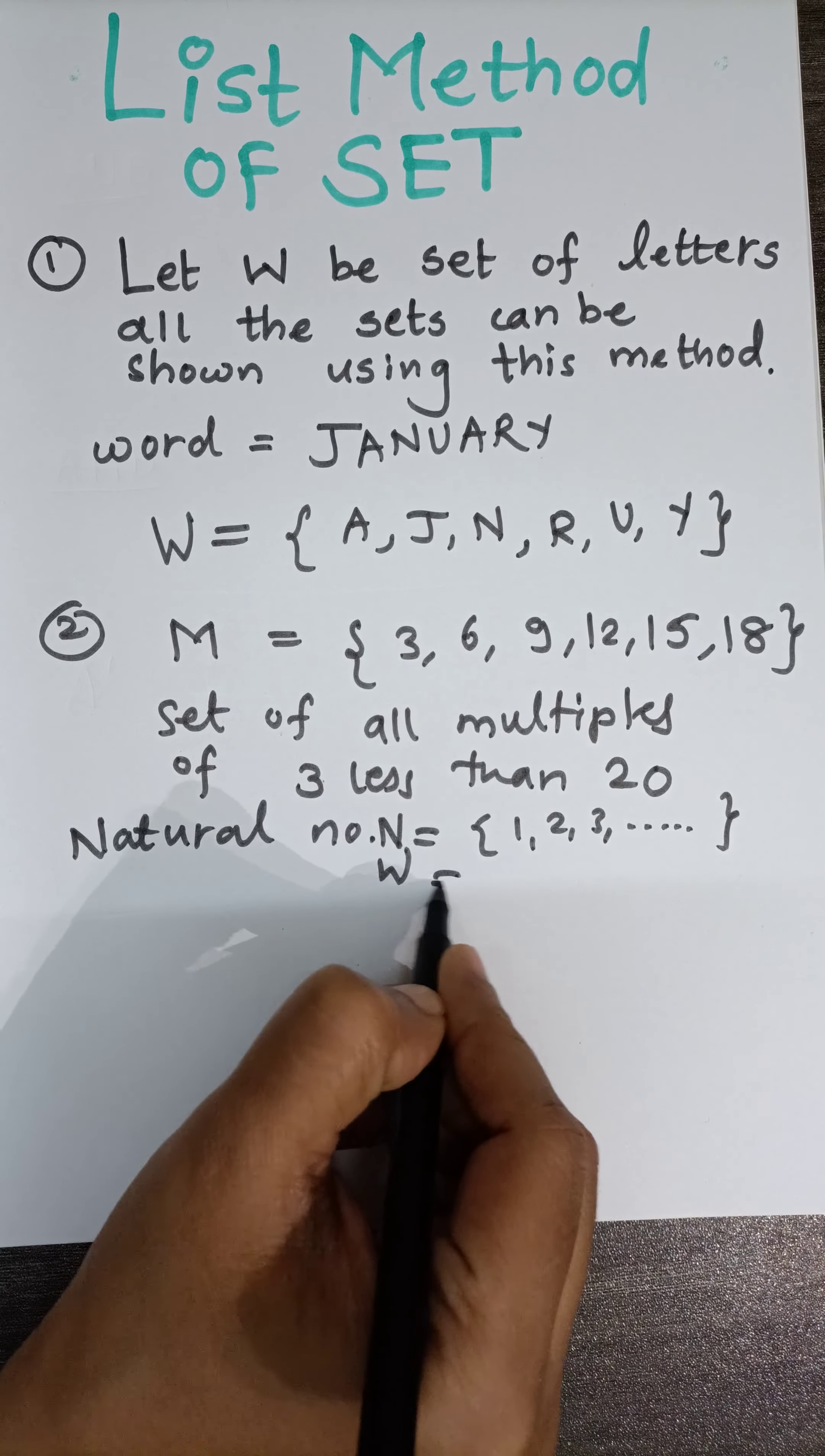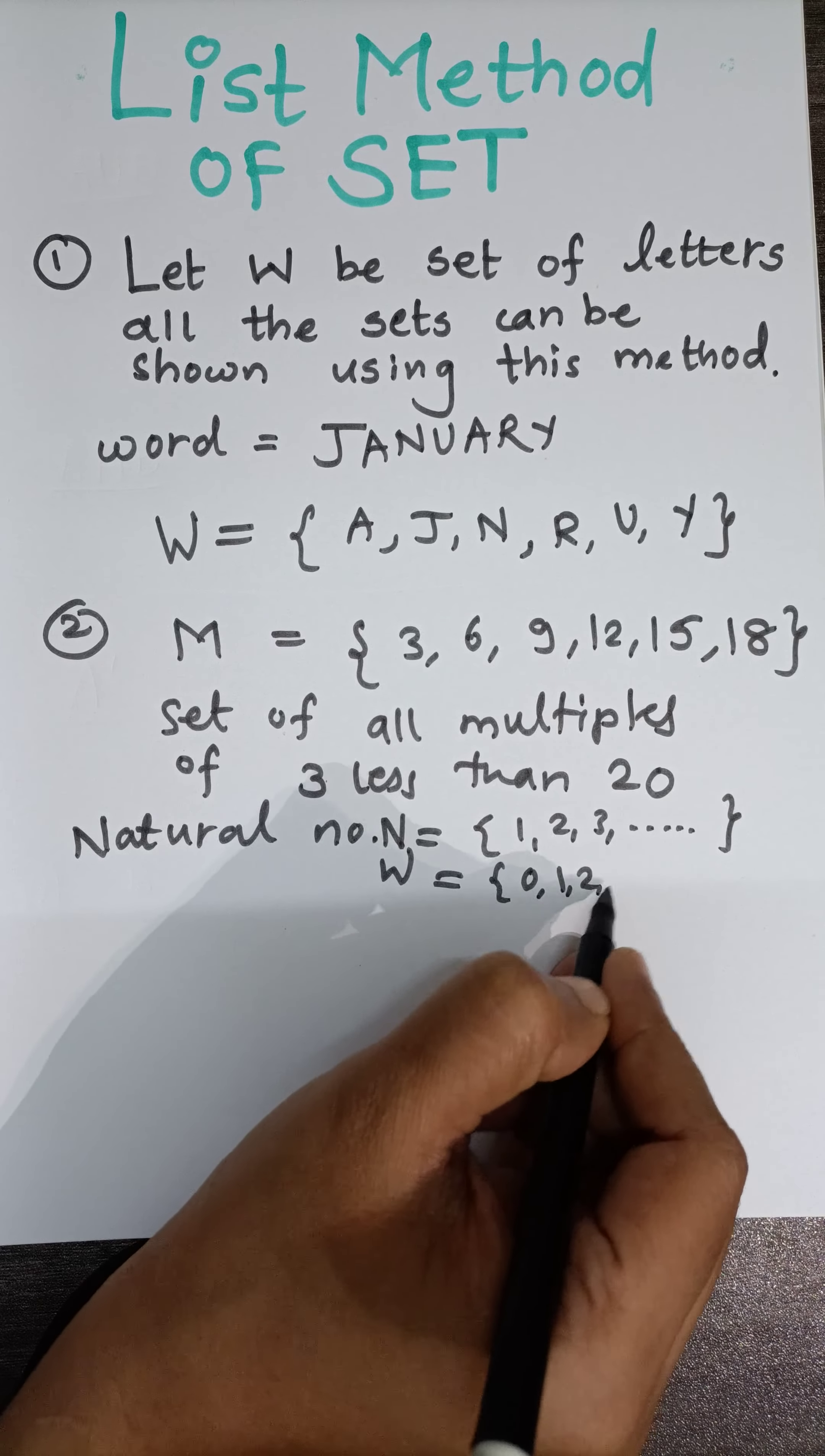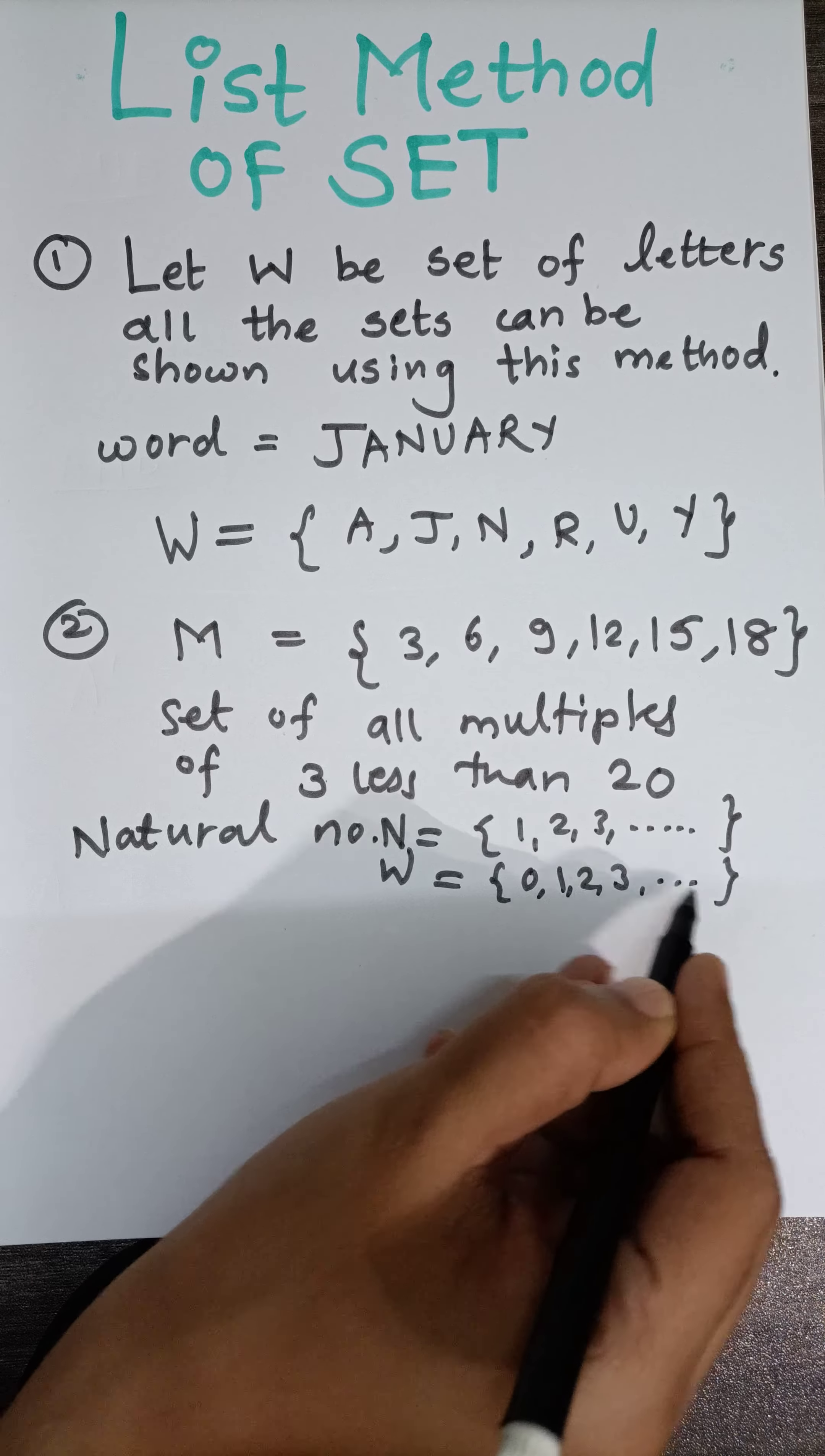Denoted with letter W, we include 0 in this set and it becomes a set of whole numbers. Again, this set is infinite.